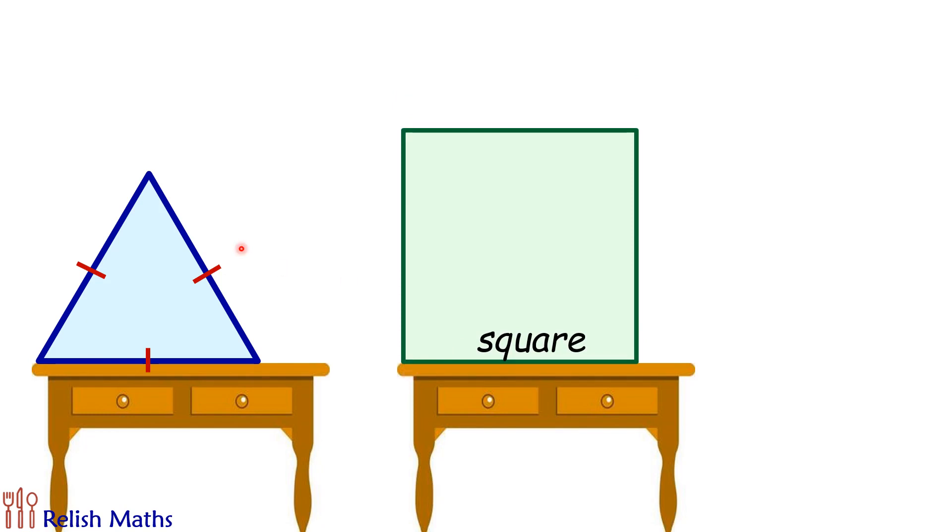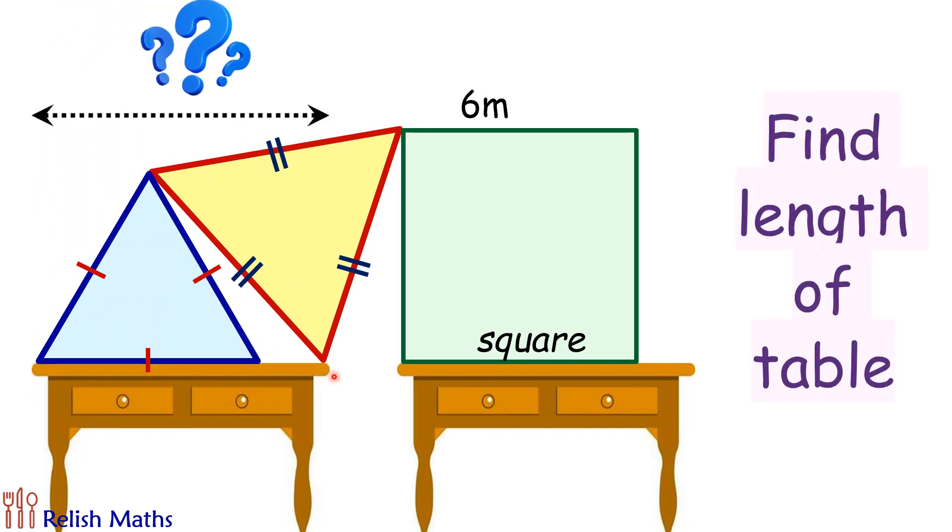In between these two we are dropping a second equilateral triangle whose vertices are touching the vertex of the equilateral triangle and square, and the third vertex of the equilateral triangle is touching the edge of the table. The side of the square is given as 6 centimeters and using this data we have to find the length of the table.